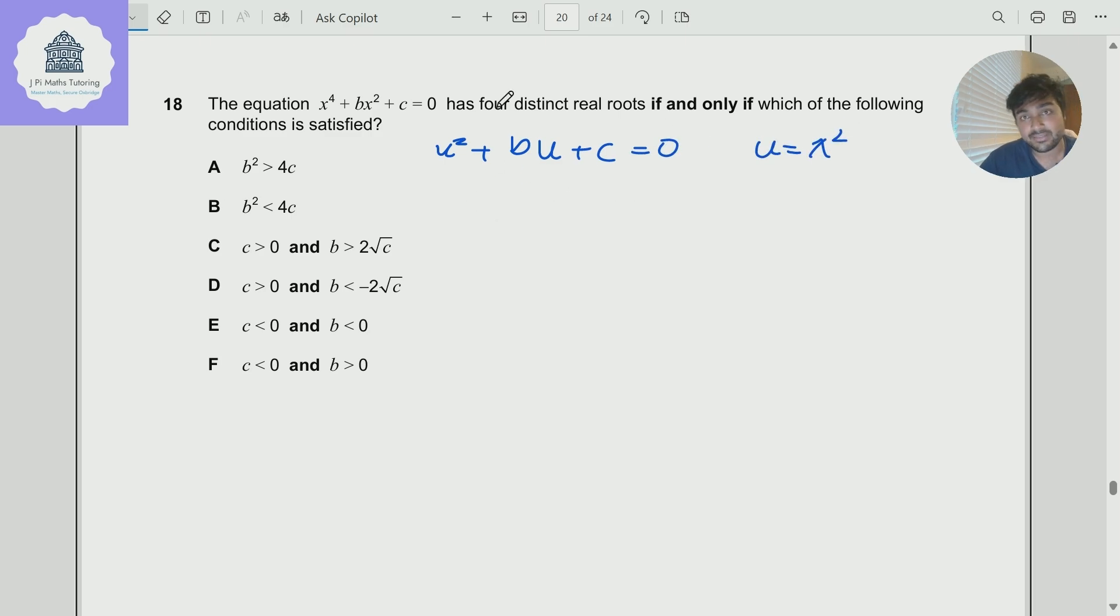So we need firstly this quadratic has to have two solutions. But furthermore, the two solutions to this quadratic both have to be positive. So we need this quadratic to have two distinct real solutions, but both those real solutions are positive. Let's just verify that this is enough as well. So let's say we have u equals alpha or u equals beta are the two solutions where alpha and beta are both positive.